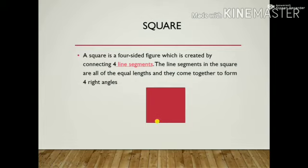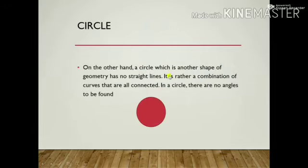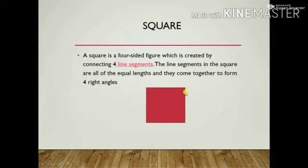Next one is circle. Circle is also a shape in geometry. Geometry is a branch in mathematics in which we study about shapes. But in circle there is no straight line.